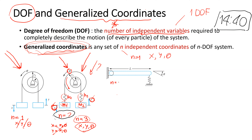I hope you can guess what should be the generalized coordinate for this one-degree-of-freedom system. In this system, we have a wall and a hinge joint — a level joint — and the bar can rotate about this level joint. We have theta that describes how much the bar rotates away from the horizontal line. So the generalized coordinate is the angle theta for this case.